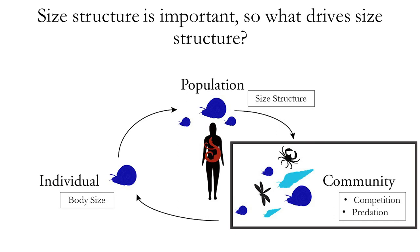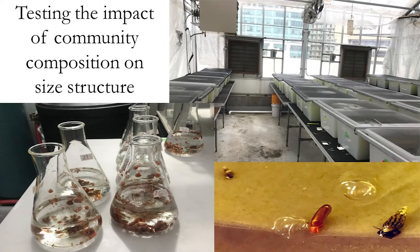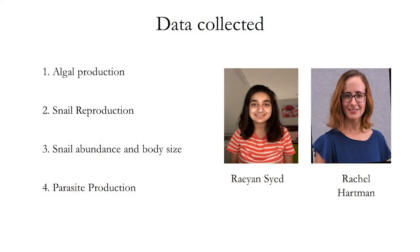Given that size structure is important, what is driving it? These snails live in complex ecological communities, and what might be changing size structures across different areas? To look at this, I did a mesocosm experiment to test the effects of community composition on size structure. I had many mesocosms — essentially fake lakes — with populations of just host snails, as well as others that had host snails alongside non-host competitor snail species. These competitor snails cannot get infected with schistosomes but do compete with host snails for resources.